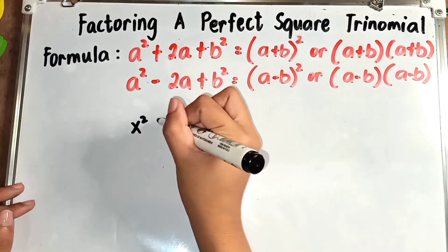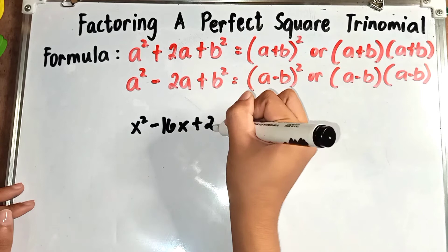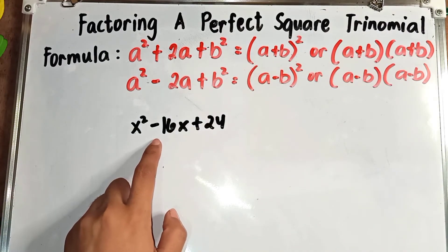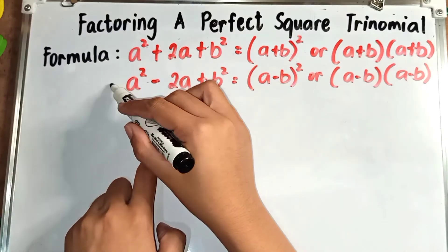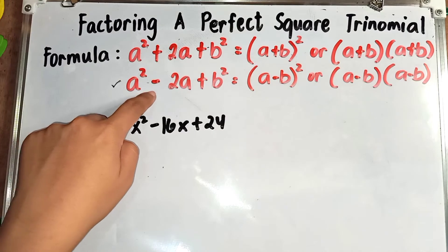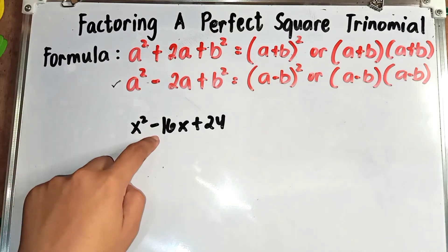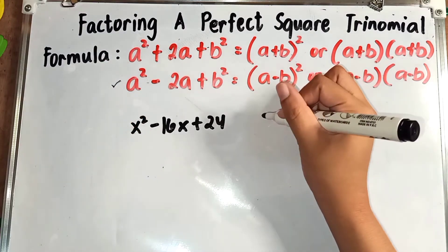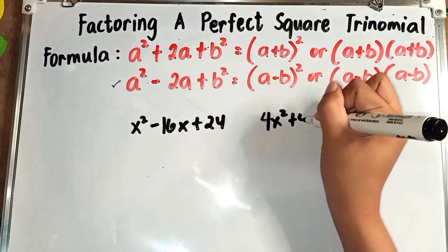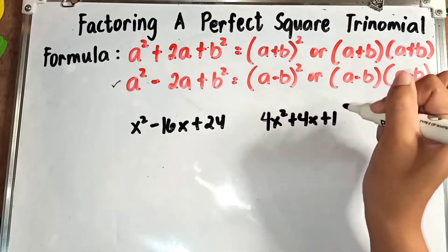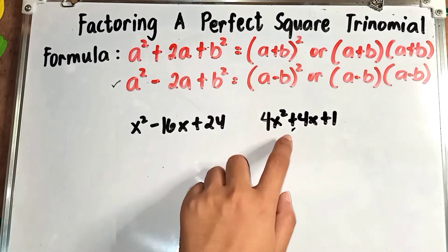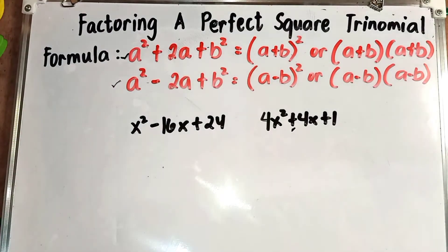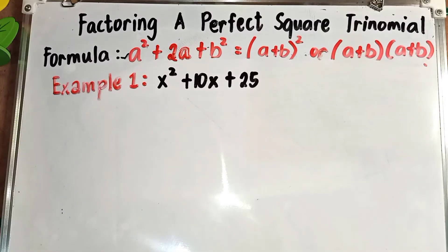For example, if you are given x² - 16x + 24, the middle sign is negative, so we will follow the second formula. On the other hand, for 4x² + 4x + 1, the middle sign is positive, so we will use the first formula.